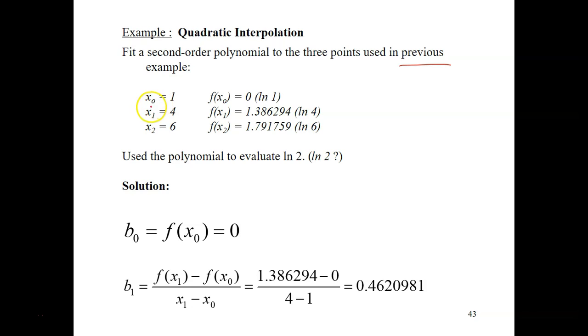So, we have three points here. x0 equals to 1, x1 equals to 4, and x2 equals to 6. So, these are your fx0. Okay? So, use the polynomial to evaluate ln 2. What is ln 2? Meaning, your x here is 2. So, what is your fx?